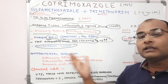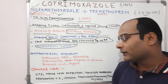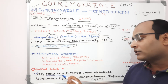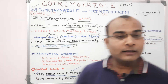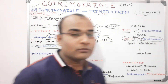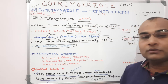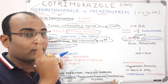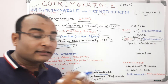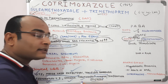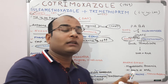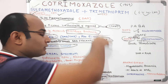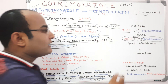Clinical uses of Cotrimoxazole include: urinary tract infections, methicillin-resistant Staphylococcus aureus (MRSA) skin infections, traveler's diarrhea, respiratory tract infections, cholera, Pneumocystis pneumonia, and toxoplasmosis. In immunocompromised patients such as those with HIV/AIDS, there is a higher chance of Pneumocystis pneumonia and toxoplasmosis, and Cotrimoxazole is frequently used against these infections.